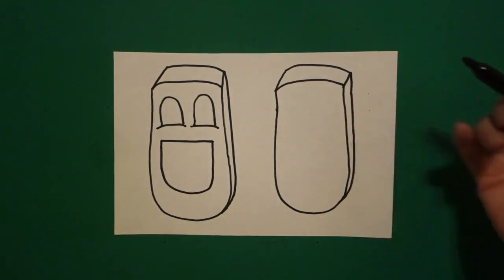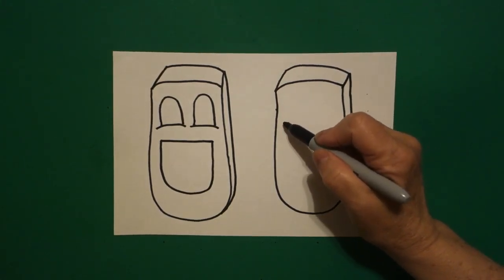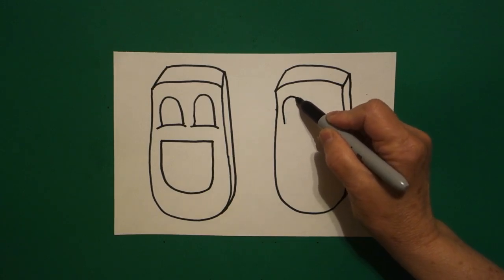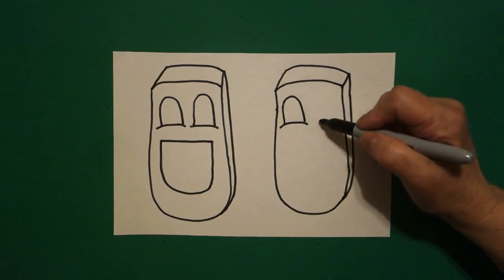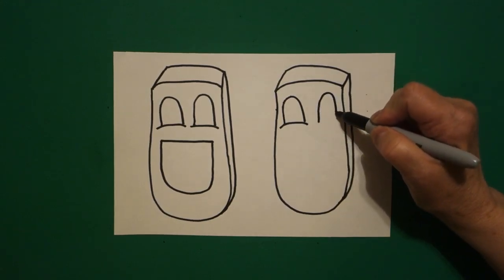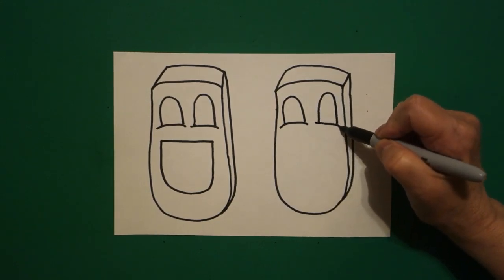Now come over here on the right hand side. We're going to do the same thing. We're going to draw a big curved line, slightly curved line on the left, big curved line, slightly curved line on the right.